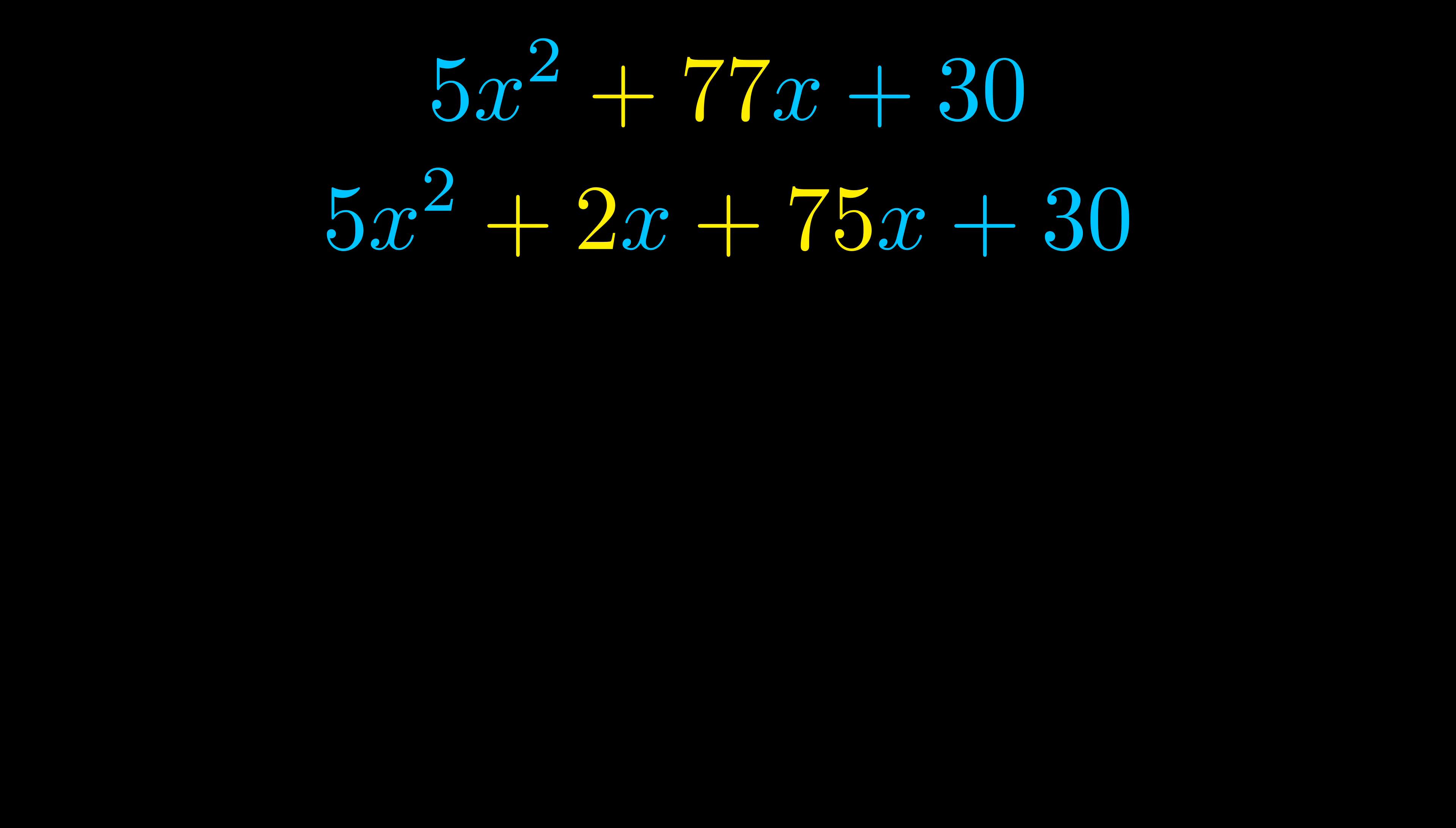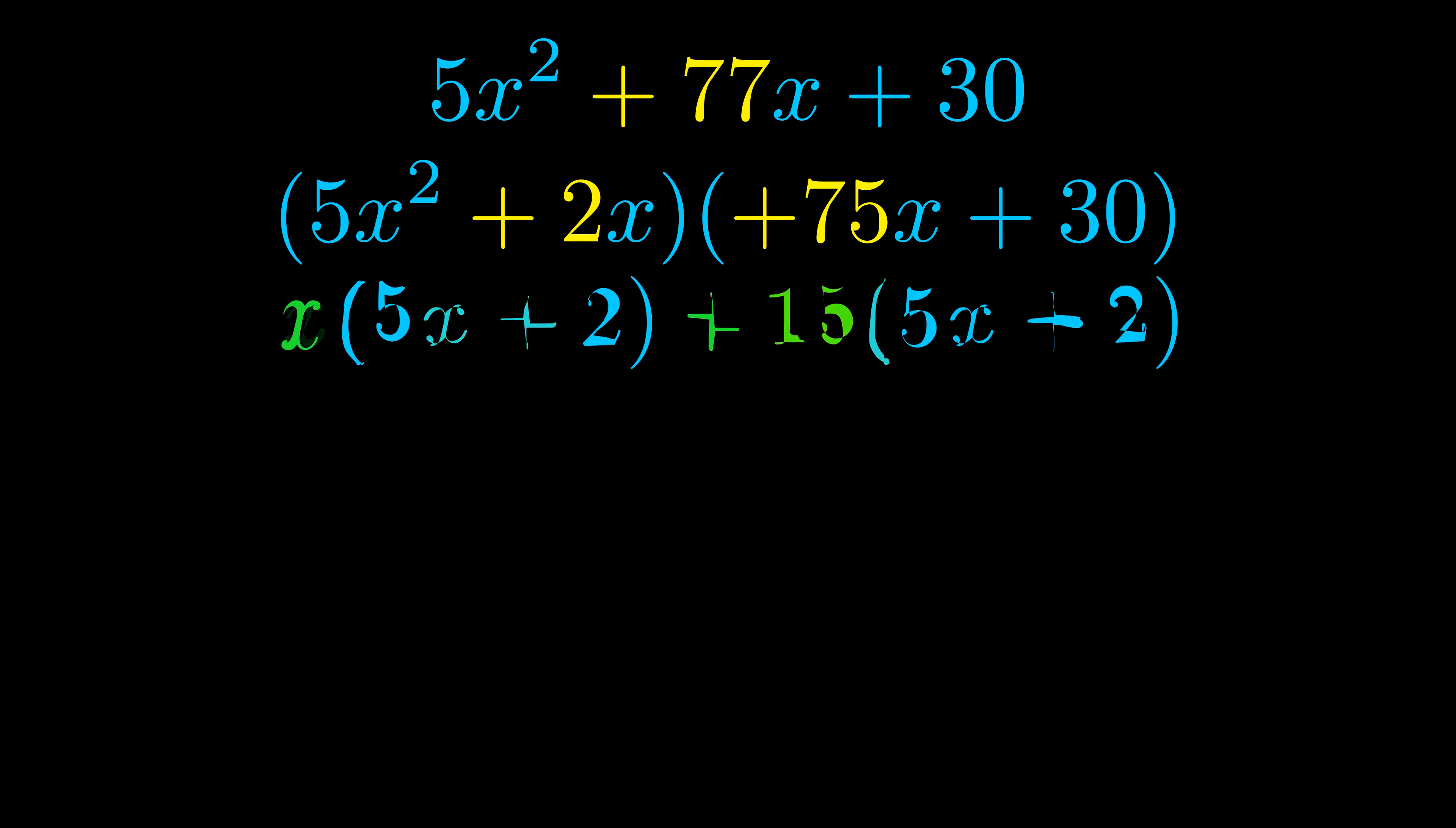Once we've done this we go ahead and we put parentheses around the first term and the last term. And we do that so that we can take the greatest common factor out of both terms. We can see the greatest common factor is now outside in green.